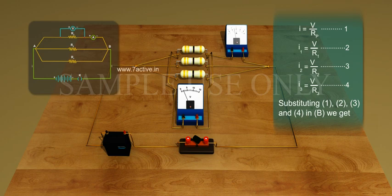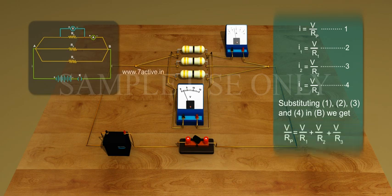Substituting equations 1, 2, 3, and 4 into equation B, we get V by Rp equals V by R1 plus V by R2 plus V by R3, or